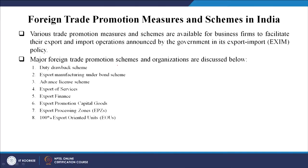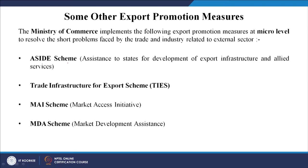Some of the schemes we had discussed are, for example, the duty drawback scheme, then export manufacturing under bond scheme, advanced license scheme, export of services, export finance, export promotional capital goods, export processing zones and 100 percent export oriented units. These are schemes which the government has made to help in boosting up the export business for Indian exporters.